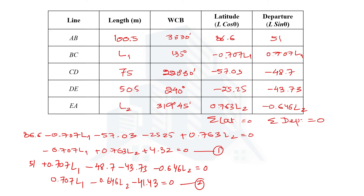Looking at these two equations carefully, the coefficient of L1 is the same in both Equation 1 and Equation 2. The advantage of this is that when we add the two equations, the L1 expression cancels out, leaving an equation with only L2 as the variable. We can then easily calculate L2 first, and once L2 is known, substitute it into either equation to get L1.